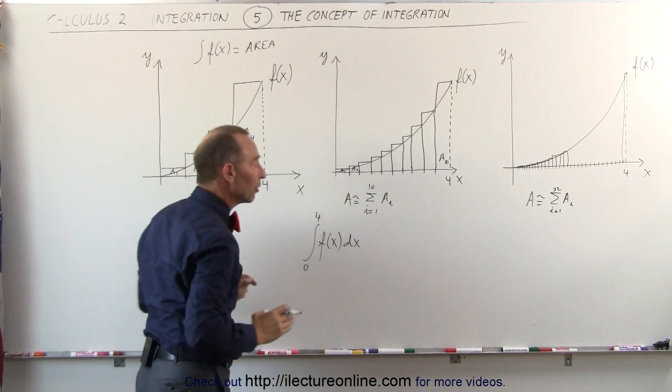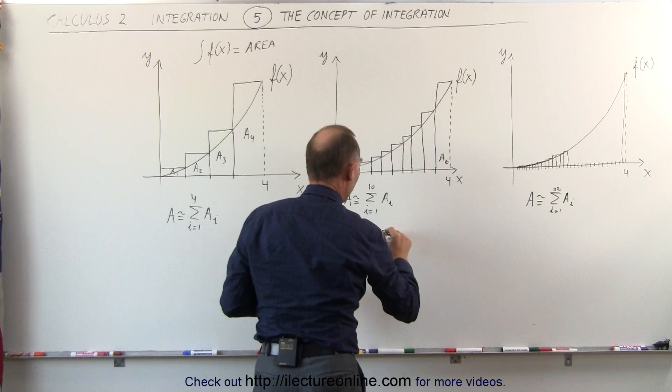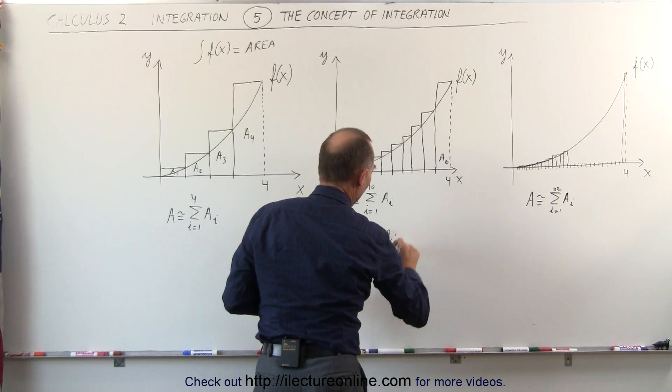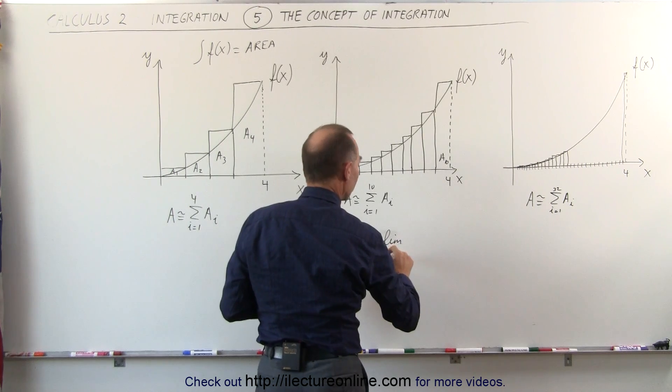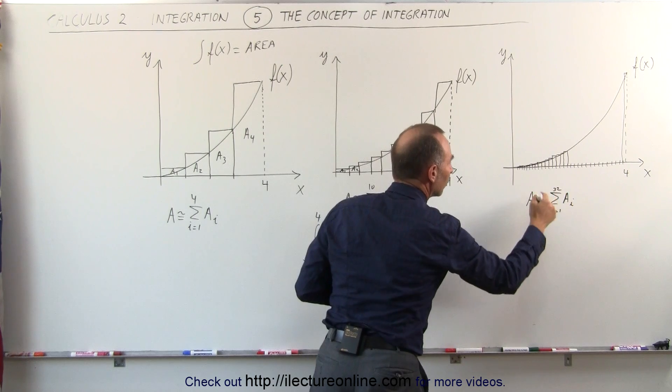In essence, it is equal to the sum, or I should say the limit as the number, so we go from i to 4, or from i to 10, or from i to 32.